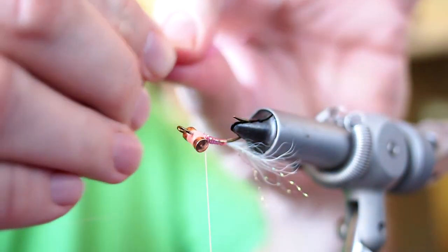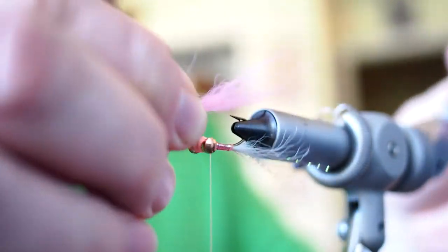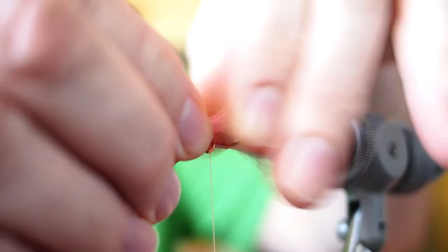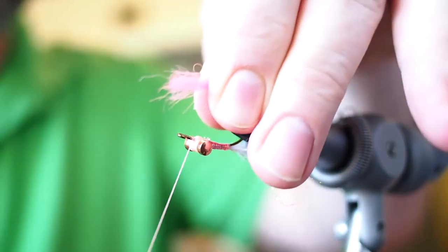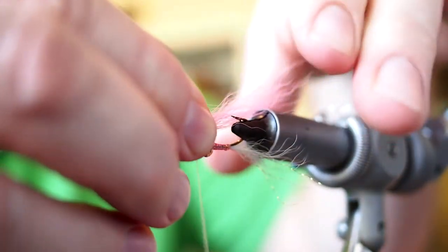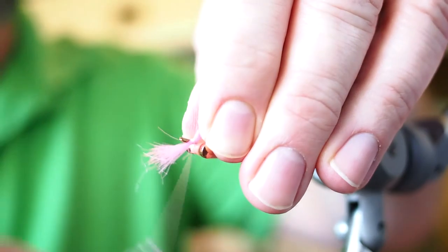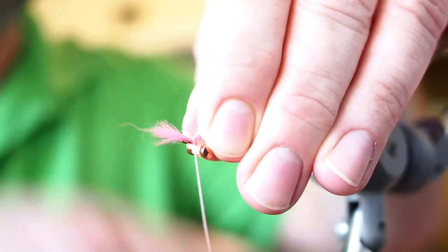So you want your wing to be as long as the tail. Get any stragglers out. I'm going to advance my thread up before I do this. Give it a pinch, give this a wrap. It's going to want to fold over to one side, just give it a couple wraps and then pull that material on top of the hook.